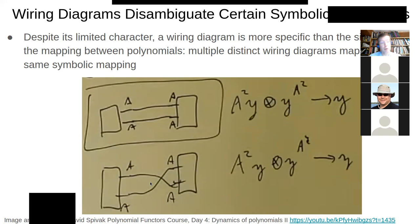but they're different as a wiring diagram. Wiring diagrams can clue us in to actually added details that are not obvious. Of course, when you have to specify this mapping, the one here will be different from the one here, but it's not obvious from its type,